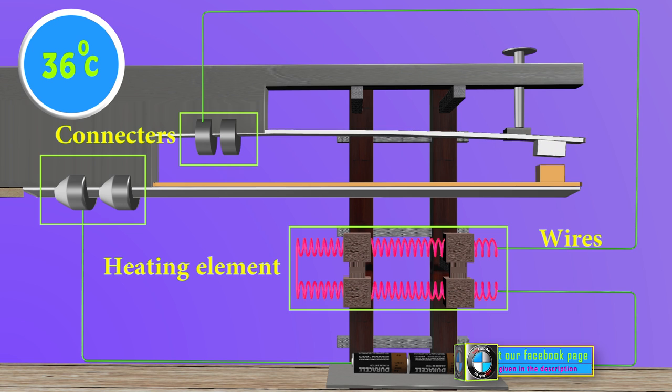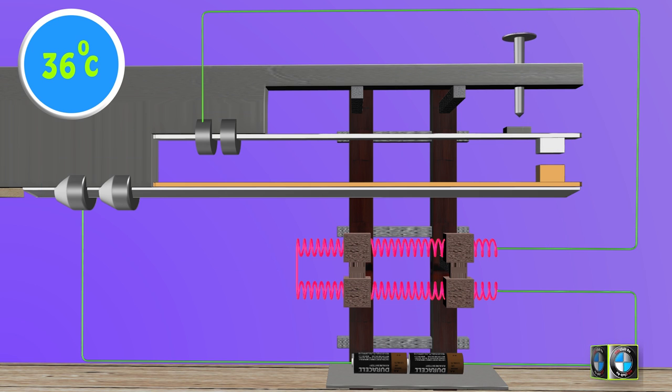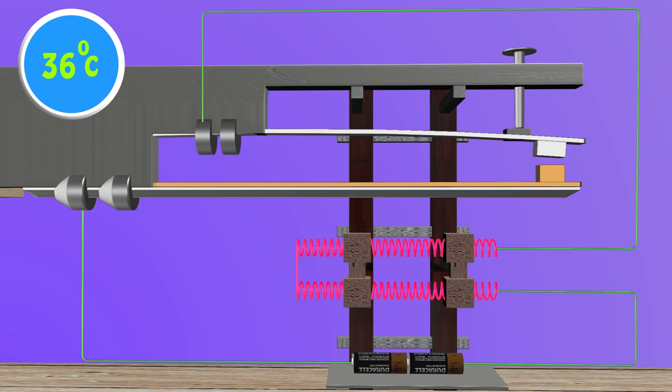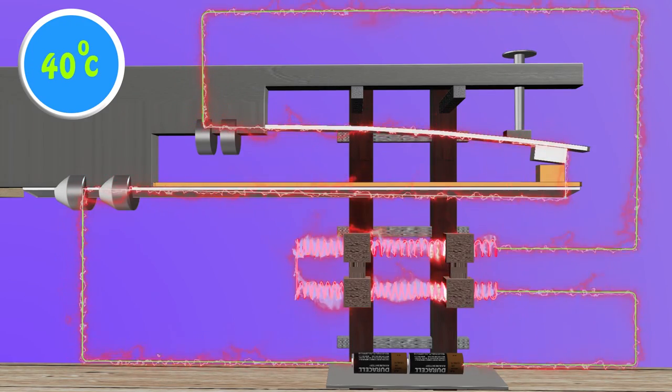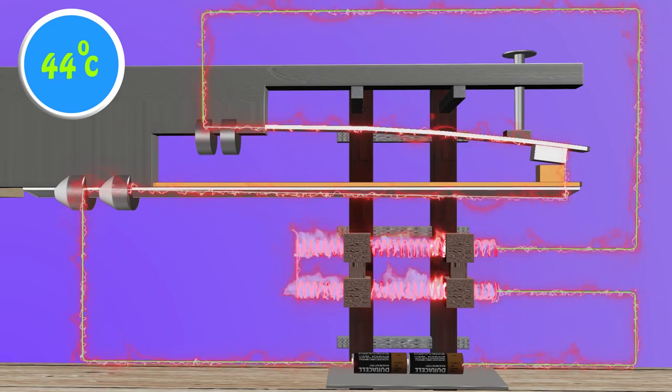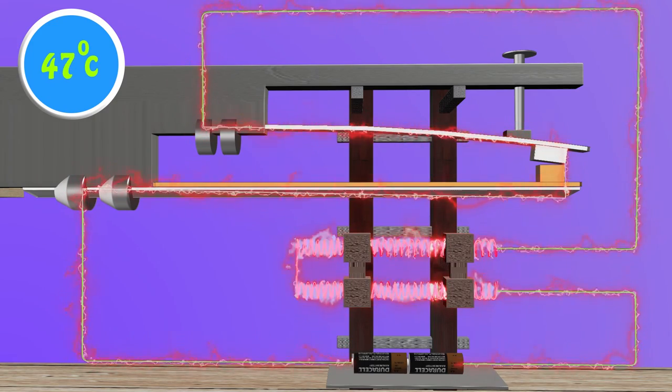To adjust the control knob, it has to be tightened until it pushes the steel spring to touch the bimetallic strip. As soon as it touches the bimetallic strip, electrical circuit is completed and current starts flowing through the heating element.